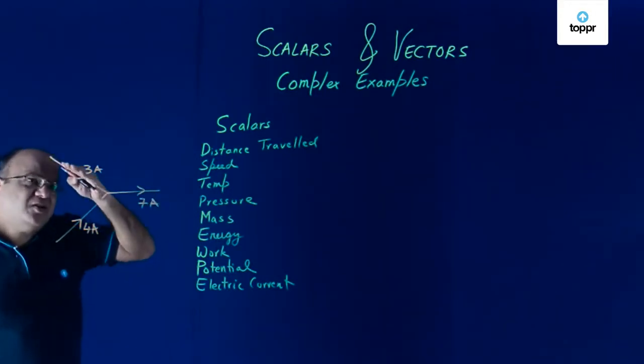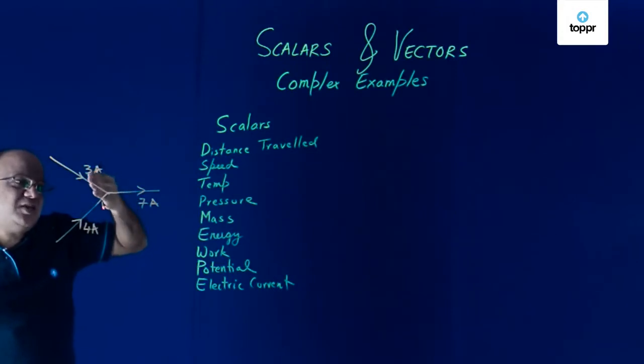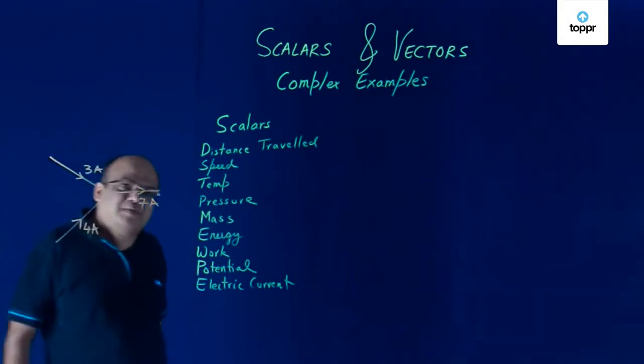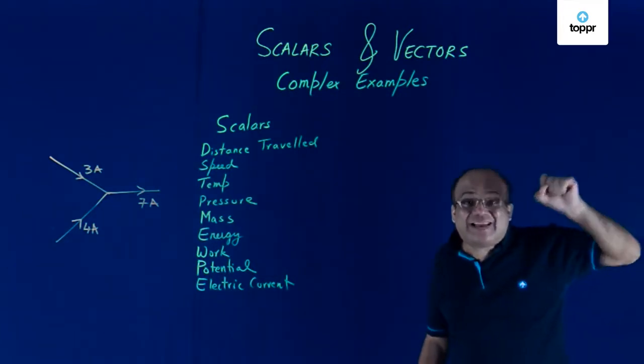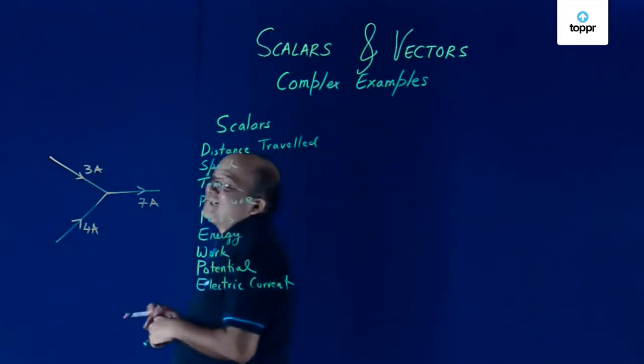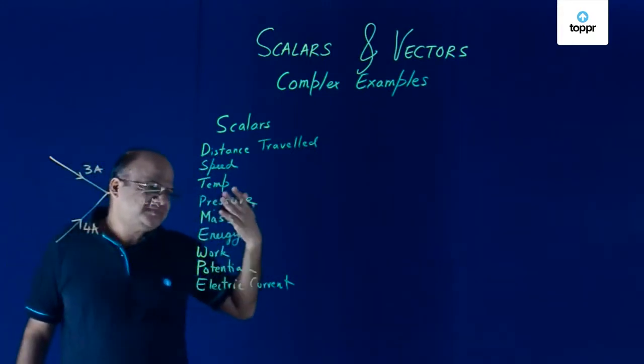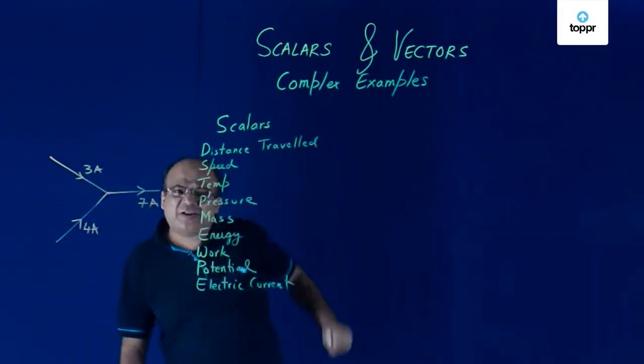This does not depend on the orientation of these wires. You keep on changing the angles to get 7 ampere. So electric current does not obey the laws of vector algebra. So electric current is a scalar. So all these are scalar quantities.